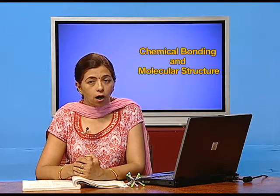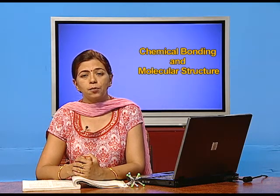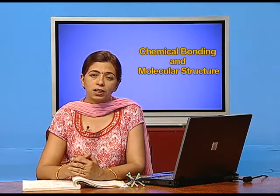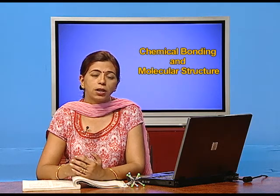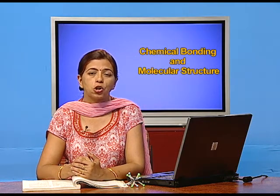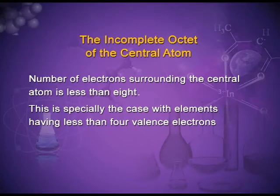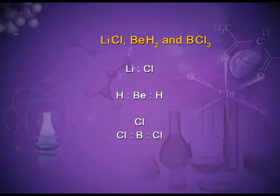However, there are limitations to the octet rule. There are many elements which cannot complete their octet — elements which have more than eight electrons in the valence shell (expanded octet) — and elements which have an odd number of electrons. The first exception: the incomplete octet of the central atom, where the number of electrons surrounding the central atom is less than eight. This is especially the case with elements having fewer than four valence electrons. Most common examples are compounds of lithium, beryllium, and boron, where the central atom completes a duplet instead of an octet.